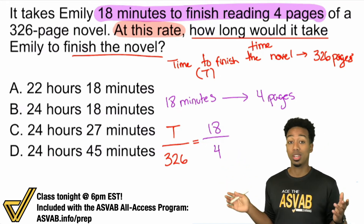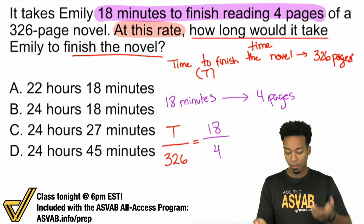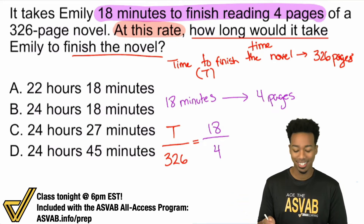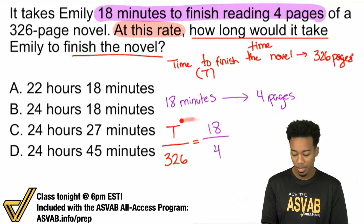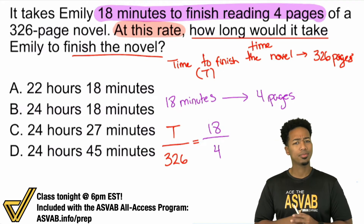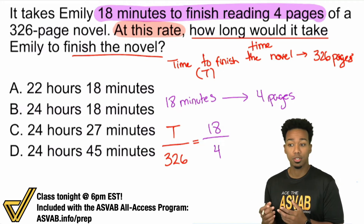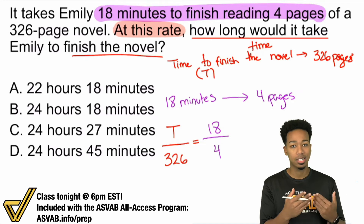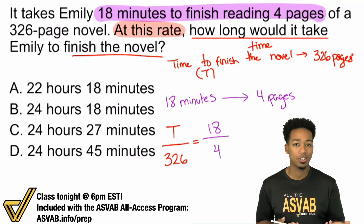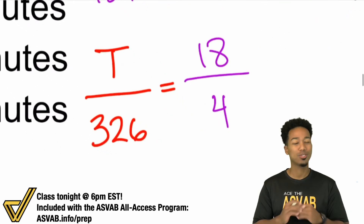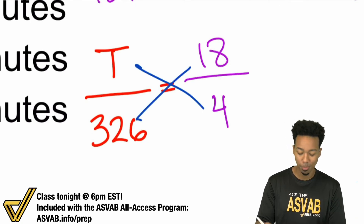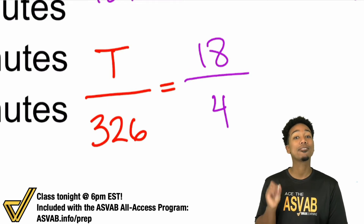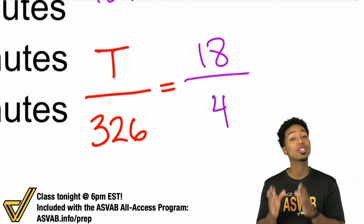You can set this up a few different ways — you could flip both sides, or compare time to time and pages to pages. But before we solve by cross multiplying and dividing, don't just jump in — simplify first so you can deal with smaller numbers. Smaller numbers are always better.